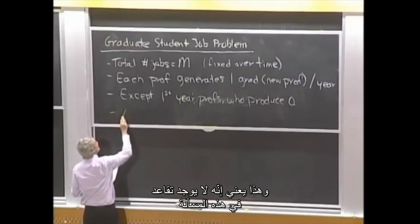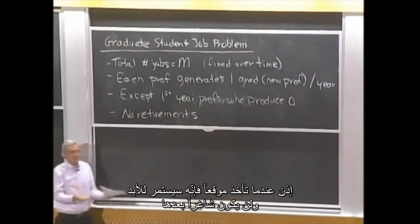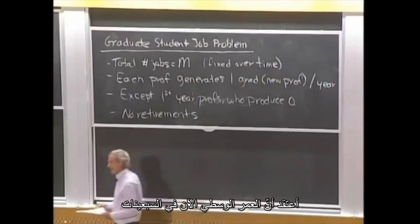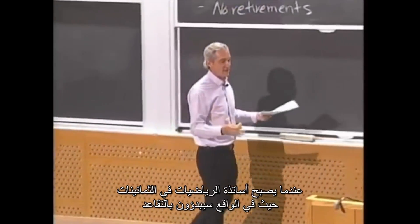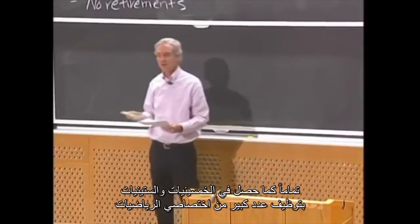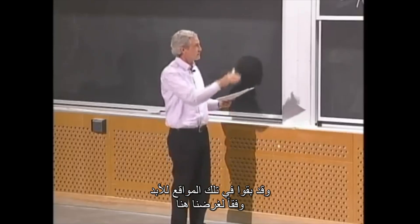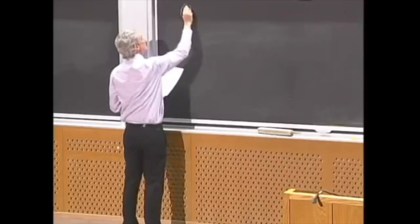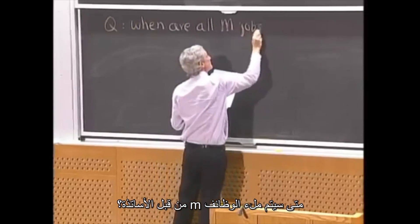Matters are made worse by the fact that Congress passed a law — and this is true — that more or less bars mandatory retirements in colleges. So there are no retirements in this problem; we assume faculty live forever. Once you fill a position, it's filled forever. If you walk around the math department, the median age is now well into the 70s. So the question is: when do all the jobs get filled — when are all M jobs filled by this process?